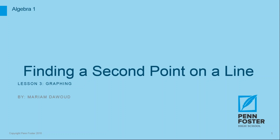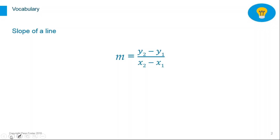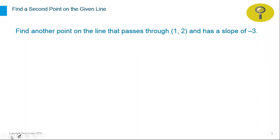Hello everyone. In this video we will look at how to find a second point on a line. Before we begin, we want to remind ourselves of the formula that we use for the slope: the slope equals y2 minus y1 divided by x2 minus x1. That means we have to have two points on the line, subtract the y coordinates on top, subtract the x coordinates on the bottom, and that will give us the slope of the line.